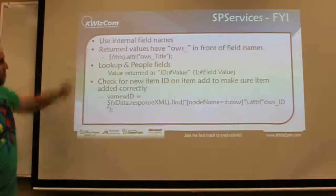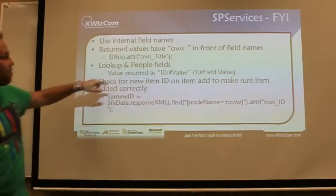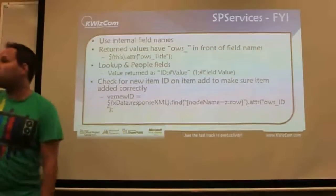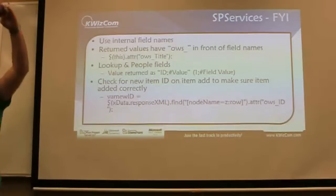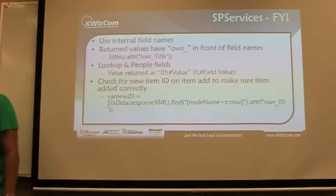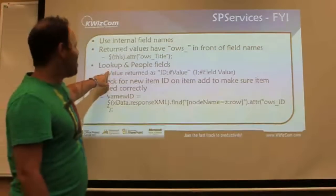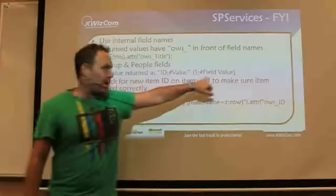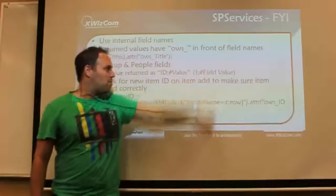Use internal field names — return values have OWS appended to the front. If you've ever used a SharePoint web service, you know this because when it comes back you get this ugly XML document with OWS in front of everything. Lookup and people fields are returned this way. Again, if you've used the web services, that's how they're returned.